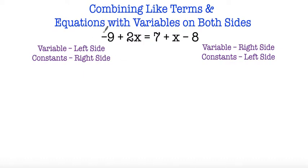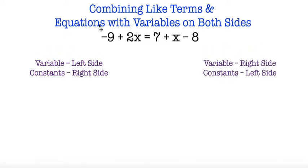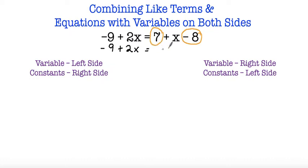So here I have an equation: negative 9 plus 2x is equal to 7 plus x minus 8. First things first, before we start solving, we're going to look at both sides of the equation and see if we can combine any like terms. On the left side I have negative 9 plus 2x — these are not like terms so I can't combine them. But on the right side I have 7 plus x minus 8, so I do have two like terms: positive 7 and negative 8. So I'm going to combine these, and I end up with negative 9 plus 2x is equal to negative 1 plus x.